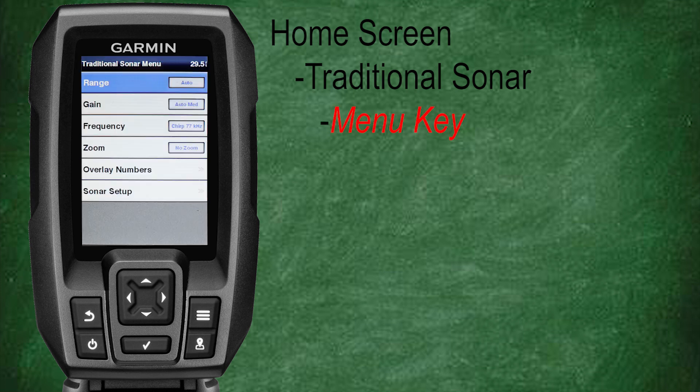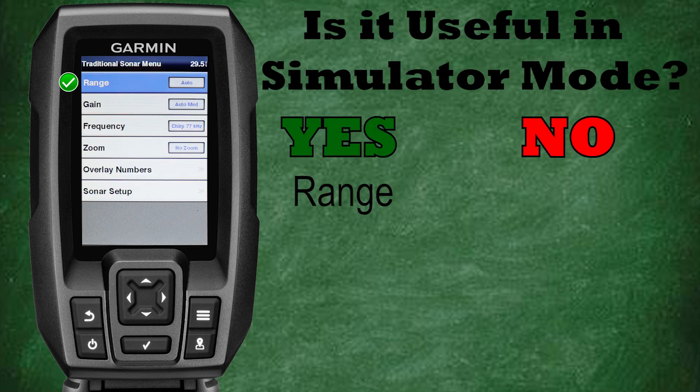Let's start at the home screen and select the traditional sonar, then press the menu key to bring up our sonar menu options. Range: you can adjust the range and learn how to use this feature while in simulator mode, though in general I tend to leave the range in auto. Gain: adjusting the gain in simulator mode has no effect on the simulation being replayed, so it's best to make your gain adjustments while on the water, which is the best place for these adjustments anyway.